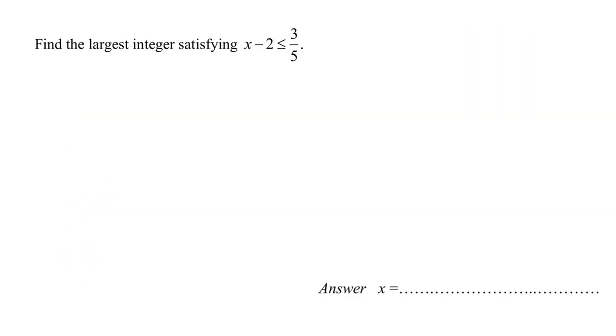Hello everyone, for this particular question we are going to find the largest integer satisfying this inequality here. Therefore, I'm going to write this down: x minus 2 must be less than or equal to 3 over 5.